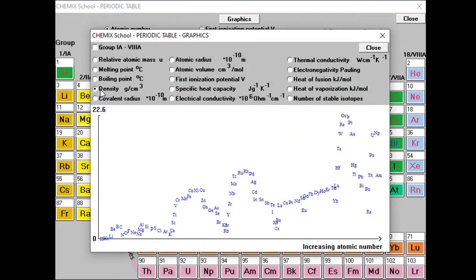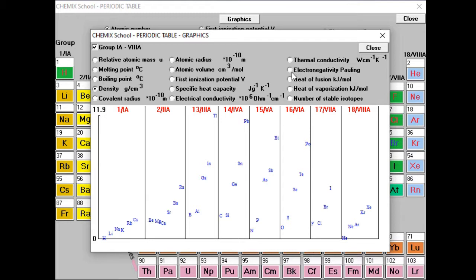Here we see the relationship between atomic number and density. It is also possible to investigate group trends. In this case, electronegativity.